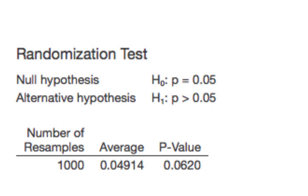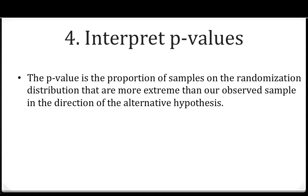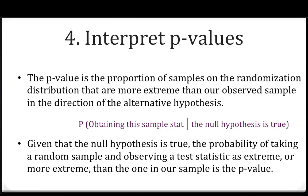Let's move on to interpreting p-values. The p-value is the proportion of samples on the randomization distribution that are more extreme than our observed sample in the direction of the alternative hypothesis. This is often written as a conditional probability: the probability of obtaining this sample statistic given that the null hypothesis is true. Equivalently, given that the null hypothesis is true, the p-value is the probability of taking a random sample and observing a test statistic as extreme or more extreme than the one in our sample.